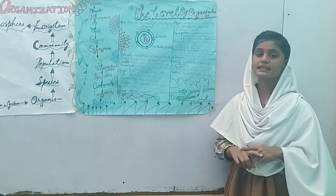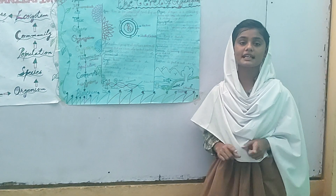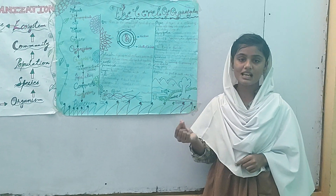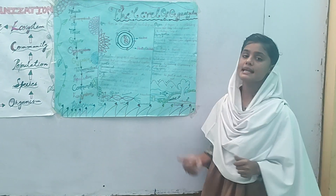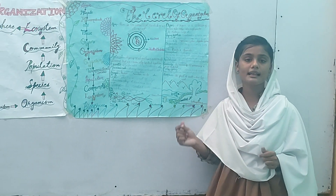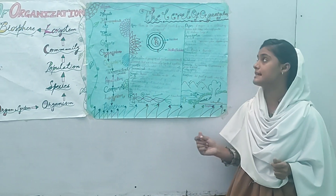Organ: a collection of tissues that carry out a single function is called an organ. Examples include the kidney, lung, etc.